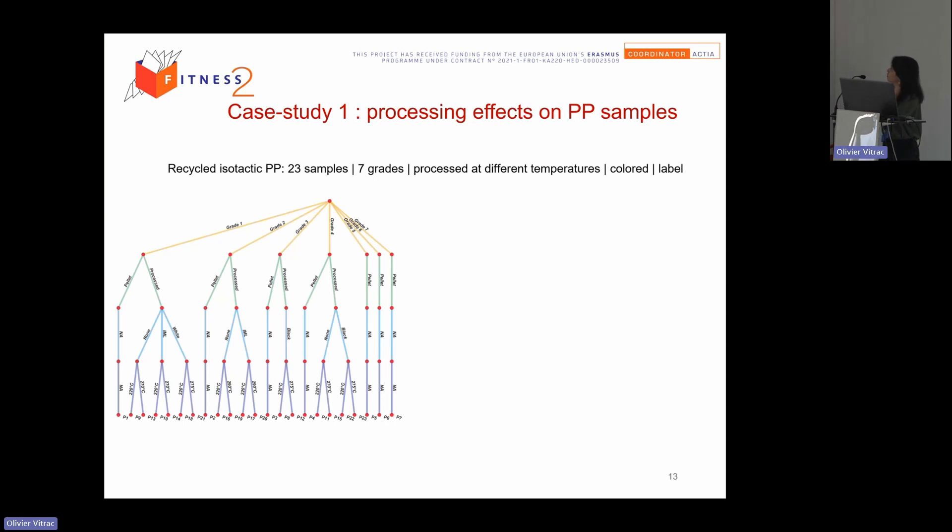And here, just to show you some case study when using chemical fingerprint concept. For the first one, we follow the processing effect on PP polypropylene samples. So here we have 23 samples, 7 grades. This one is a priori graph, 7 grades. We can have different processor temperatures. We can have also different forms, pellets or processed, so pellets or trays. We can add also some colorant, black, with the colorant, black and white. And also we can add some labels.